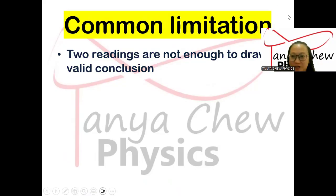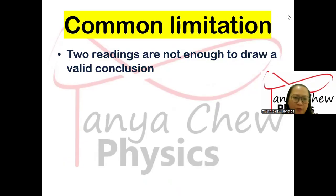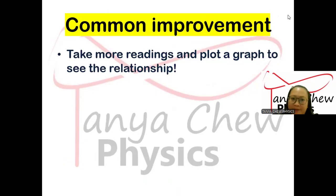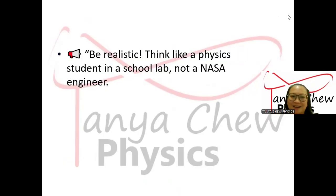Now, here is a common limitation that is 100% true for all experiments in AS Physics Paper 3 Question 2. Always write this: 'Two readings are not enough to draw a valid conclusion.' And then the matching improvement is: take more readings — not just find the average — but instead, plot a graph to see the relationship. Memorize this and you will get two marks immediately.